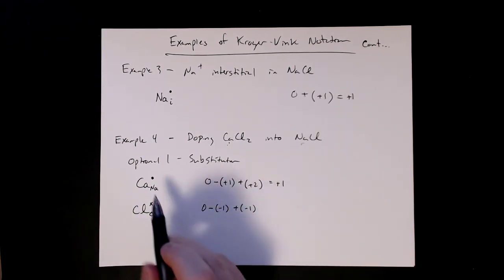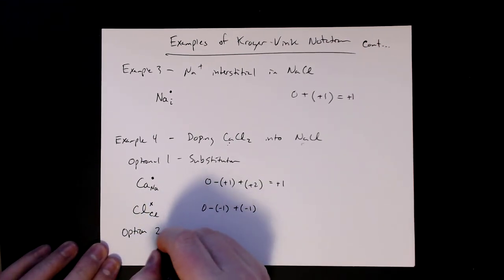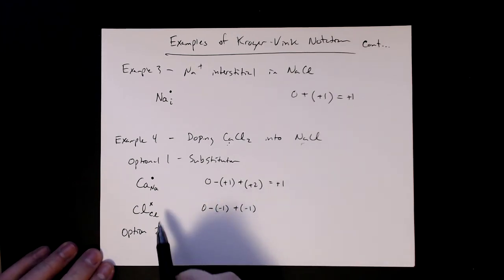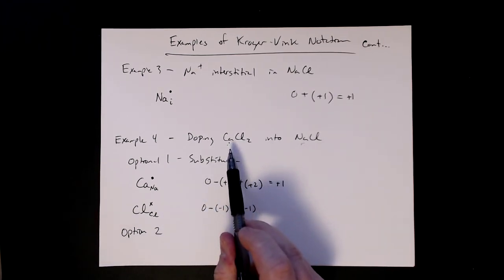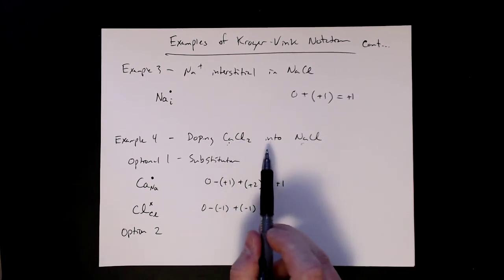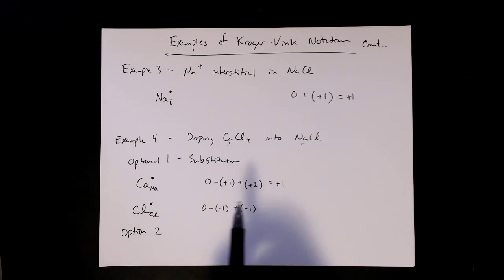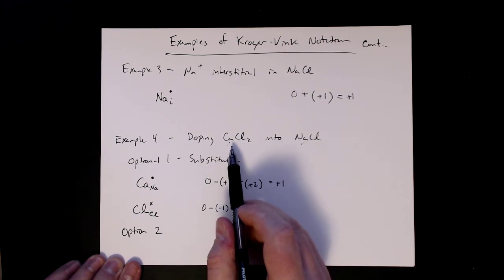So this is the one option where we have substitution. Now let's consider in the second option here that we have interstitials. So even though the calcium would be the most likely because of the size, we're also going to look at chlorine interstitials. Again, it's not favored, but we'll just look at it so that you can see what it would look like.